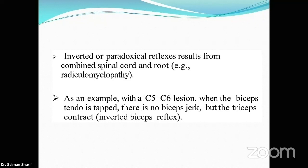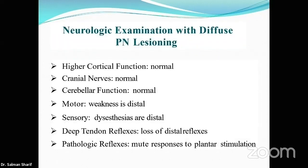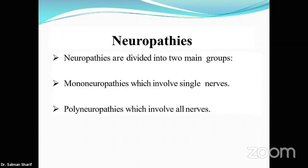To differentiate a single nerve root lesion from a diffuse process: a nerve root lesion will have weakness and sensory loss in a specific distribution, while in a diffuse peripheral process weakness and dysesthesia tend to be distal. Neuropathies can be mononeuropathy or polyneuropathy.